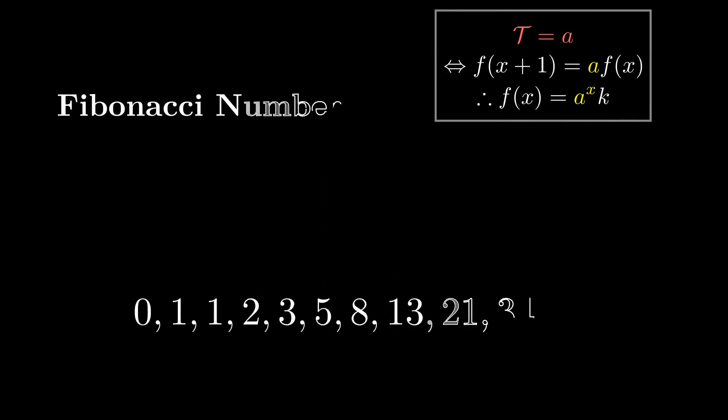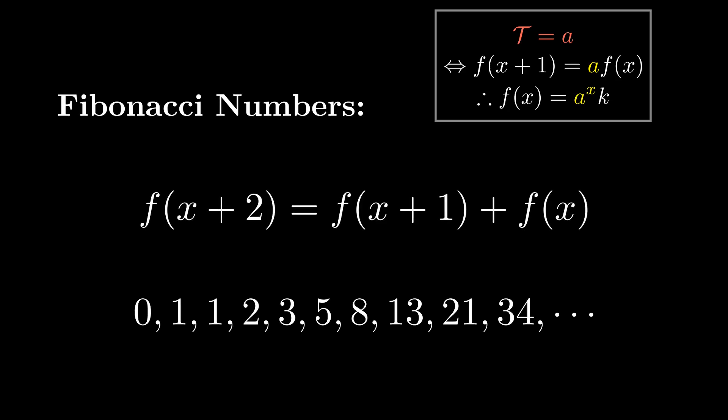Now, recall that the Fibonacci sequence is defined like this. Each term is the sum of the previous two. 0 plus 1 is 1, 1 plus 1 is 2, 1 plus 2 is 3, and so on.